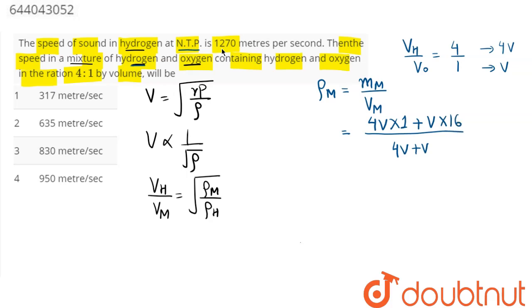Now here this is coming to be 4v plus 16v, that is 20v, divided by 5v, which is equal to 4v. So this is the density of the mixture.